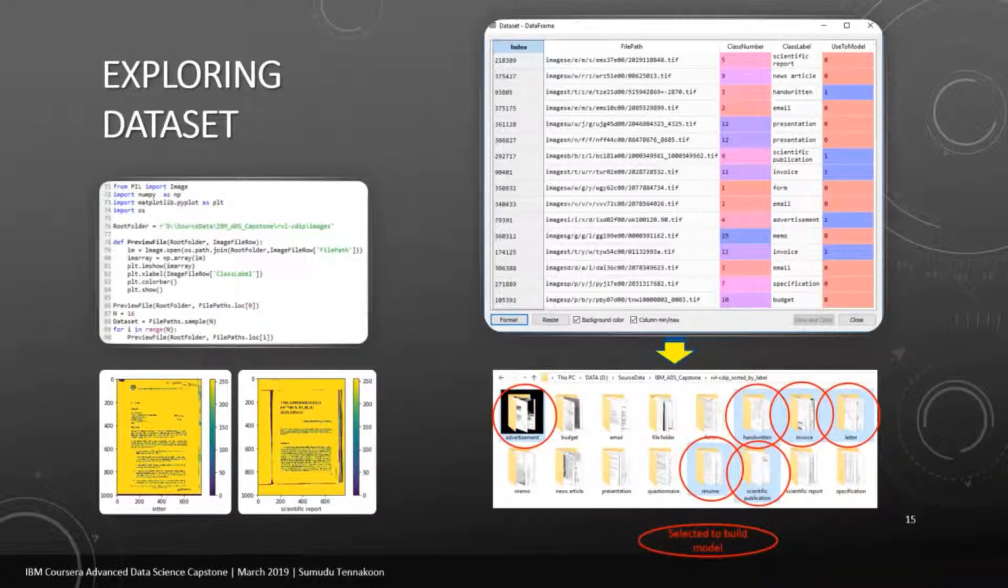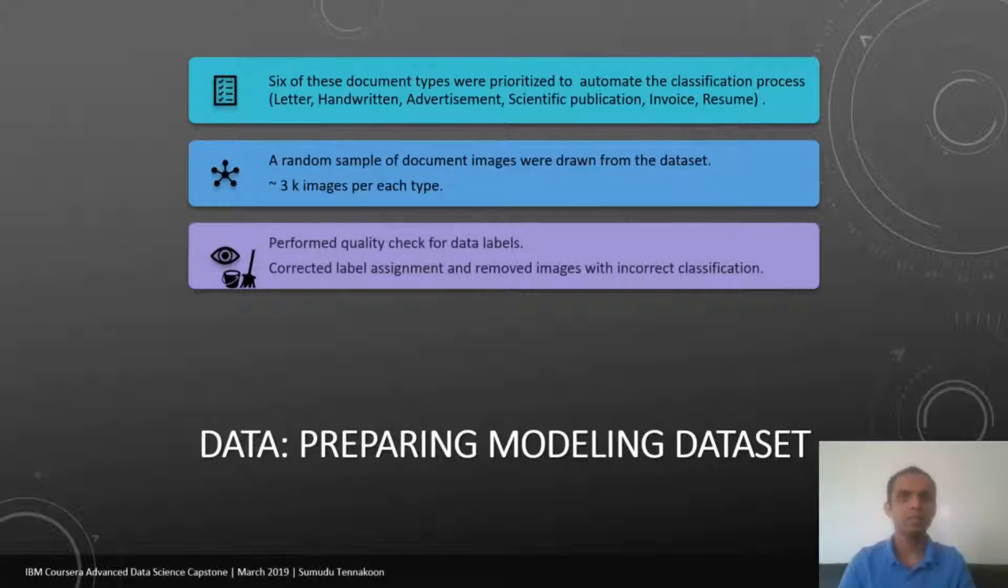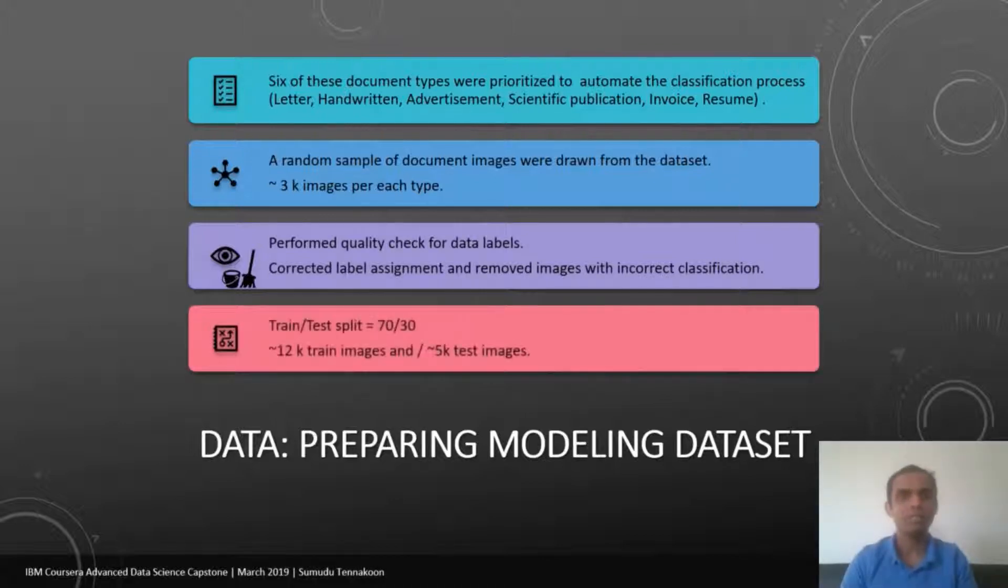Out of these 16 different document types, I selected six types to be used in the model building: advertisement, handwritten, invoices, letters, resume, and scientific publications. Then I extracted a random sample of documents from this large dataset, which had 3,000 documents from each type and then moved into separate folders. After that, I did my close examination on the document labeling. I removed documents with incorrect labeling from their folder. As well as if there's any misclassification among these six types, I moved documents to the correct group. After finishing the data quality check, I moved into building the modeling dataset.